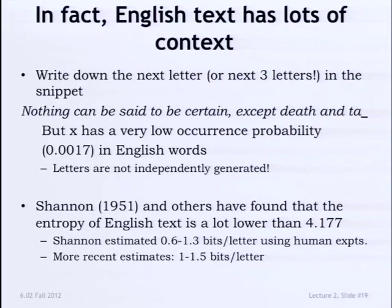What we'd really like to compute for long sequences of symbols is the joint entropy of a sequence of k symbols divided by k, in the limit as k goes to infinity. That's the entropy rate — usually written with an overbar in textbooks. For sequential text with context, this is the entropy you'd really like to work with.